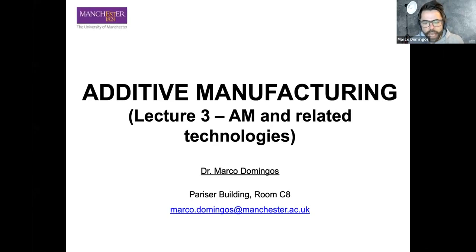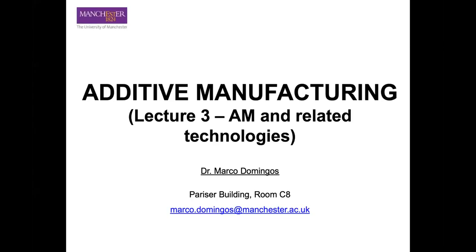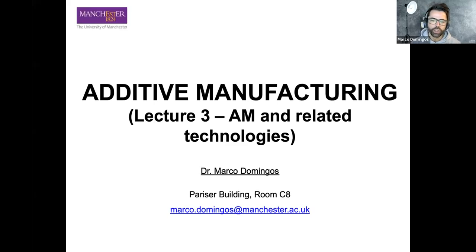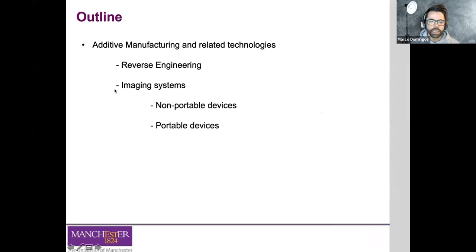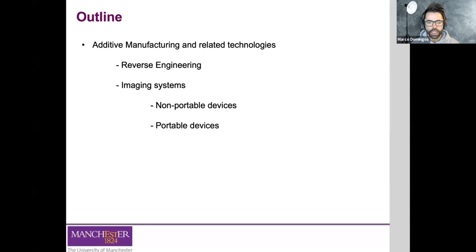We're going to talk about additive manufacturing and in particular related additive manufacturing technologies — technologies that are complementary to additive manufacturing and can be used to support the process of 3D printing. In particular, we're going to talk about the process of reverse engineering, the different imaging systems we can use, both portable 3D scanning devices as well as non-portable devices.